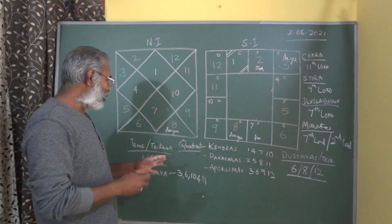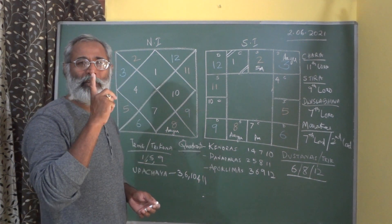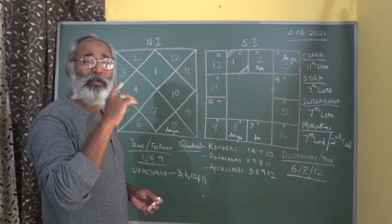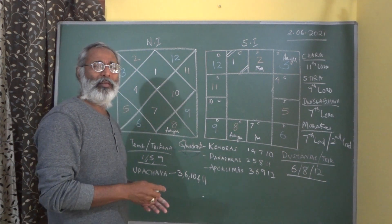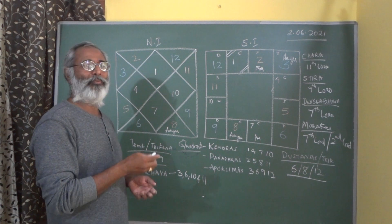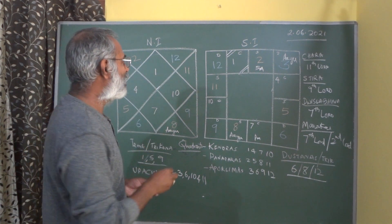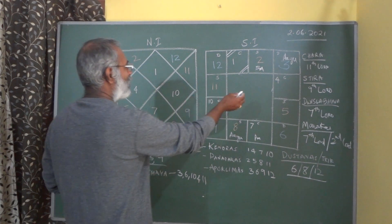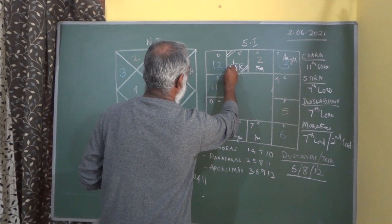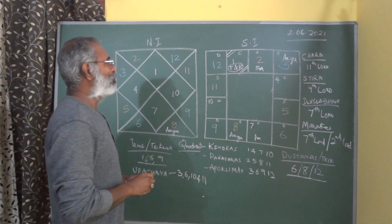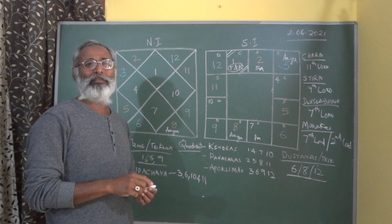There are many antidotes to Marakas — please do not think that whenever the dasha of a Maraka comes the person will die. There are also many ascendants where the 2nd Lord does not become the Maraka. We have to go to the Drekana and Navamsha level, the Karadrakana and Murtriyamsha — we will see that later. Because the 8th house is Ayu, the 7th becomes the Maraka, and because the 3rd house is the 8th from the 8th, the 2nd house becomes the Maraka.